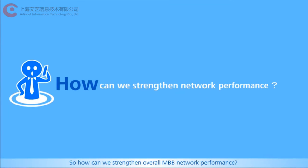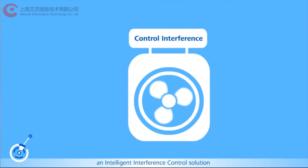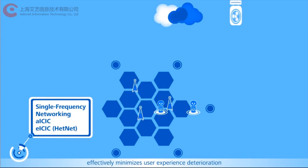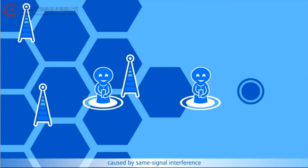So how can we strengthen overall MBB network performance? For interference, an intelligent interference control solution effectively minimizes user experience deterioration caused by same-signal interference.